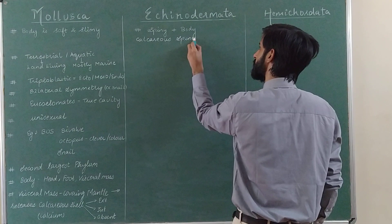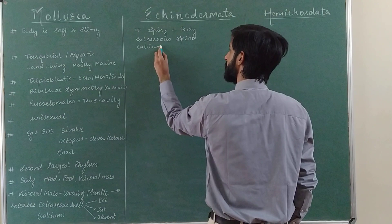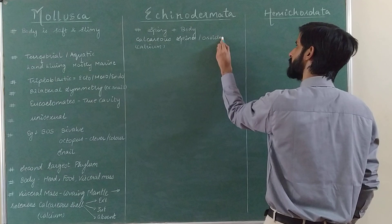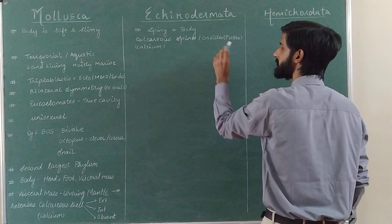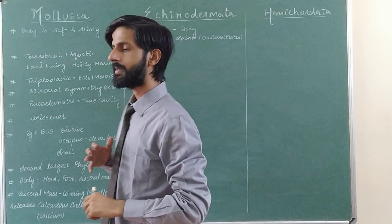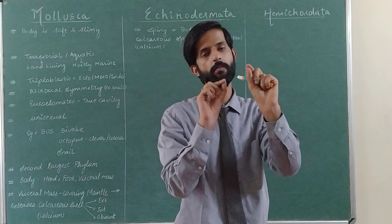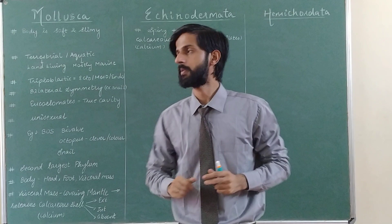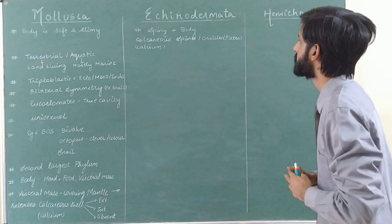These calcareous spines are made of calcium. Some Echinodermata also have ossicles, which are small bone-like structures. So the speciality of Echinodermata is the presence of a large number of calcareous spines, and some show ossicles — also called plates.